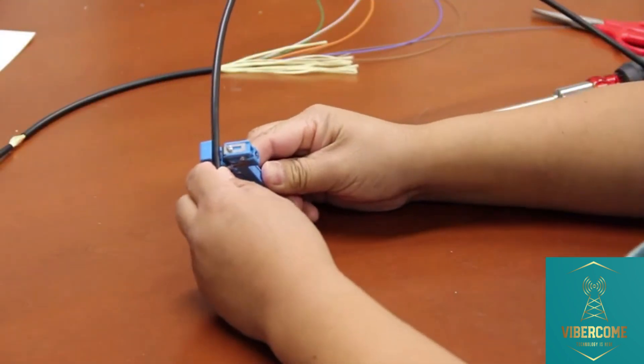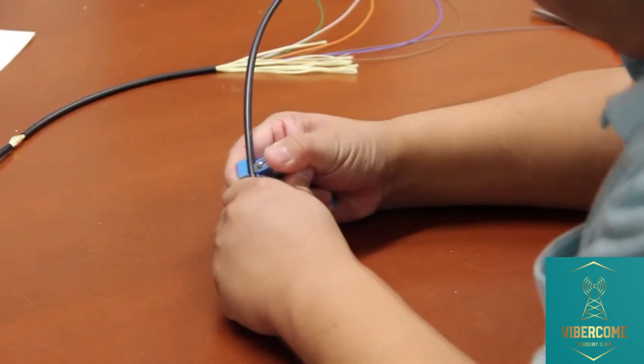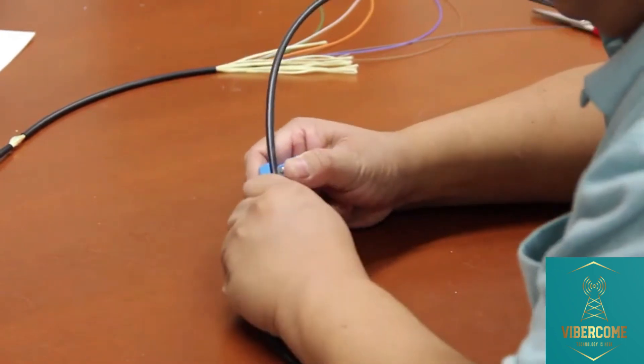Put the cable where the longitudinal cut starts. Press the blade down so it cuts into the material, then pull it along the buffer tube until it needs to stop.